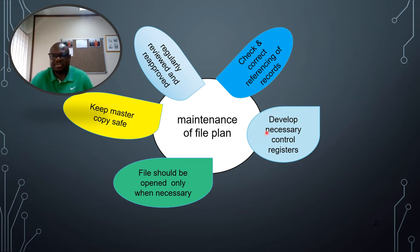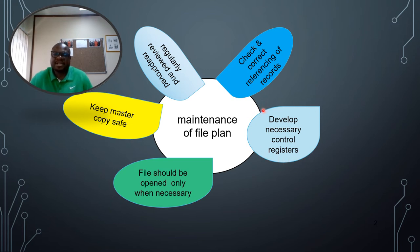One key thing is that you need to develop the necessary control registers, such as the register for circulation, the register for distribution of records, the register for receiving new records in the registry, and many more. There are many registers that need to be developed to track file movement and references.